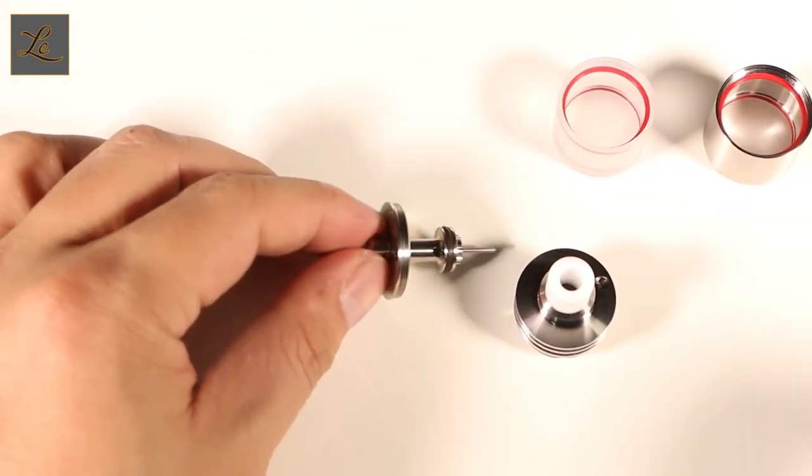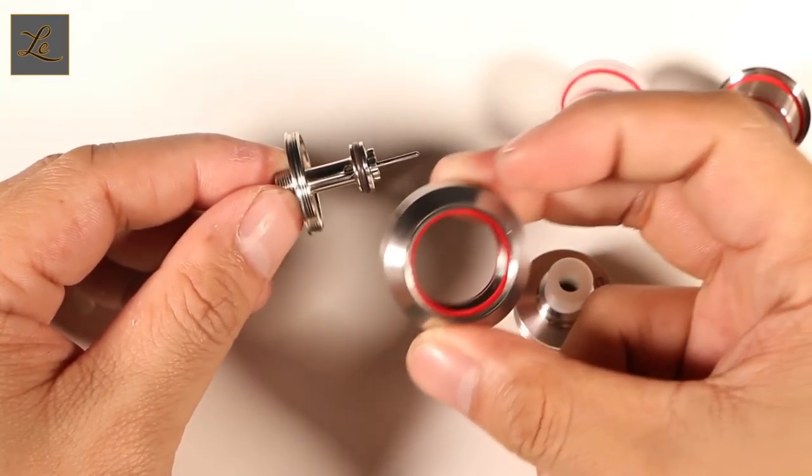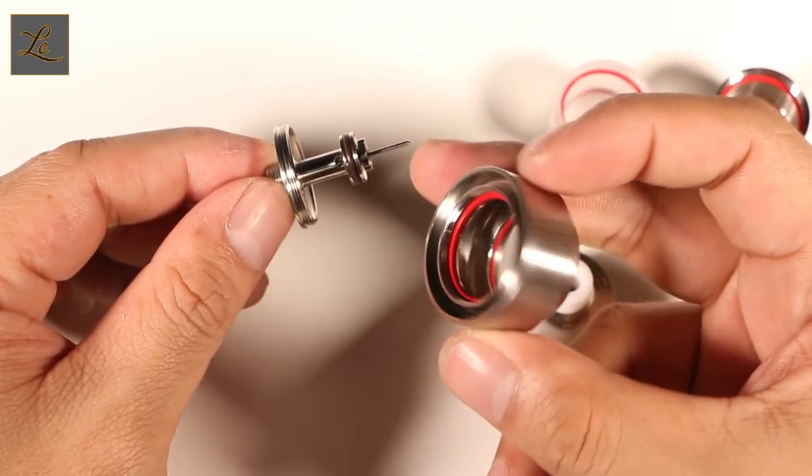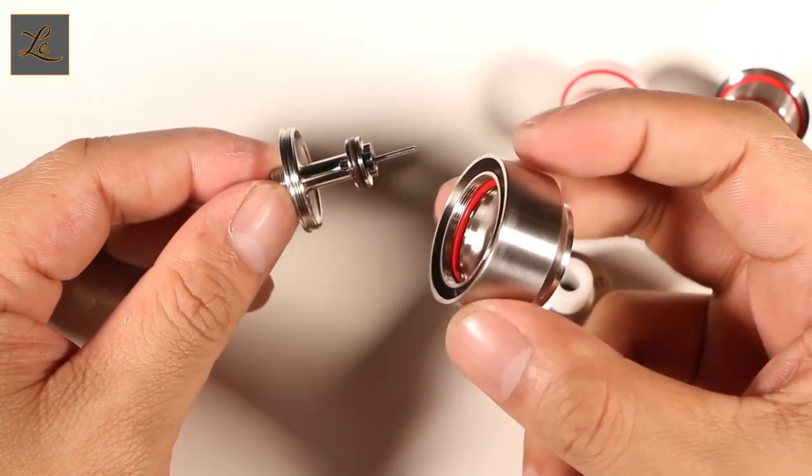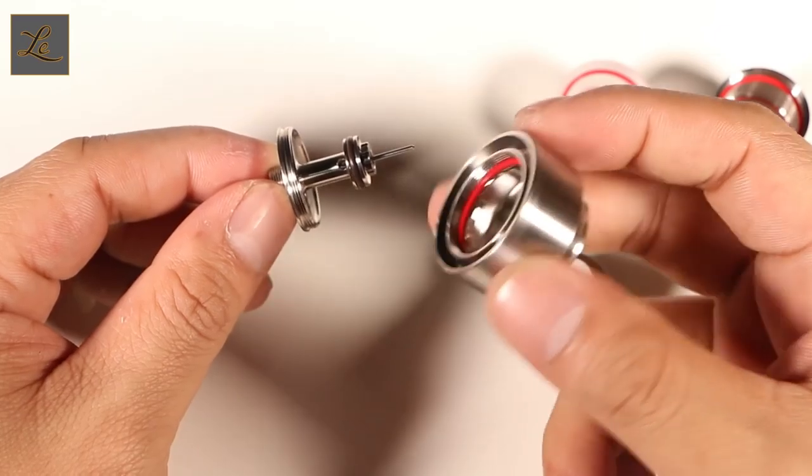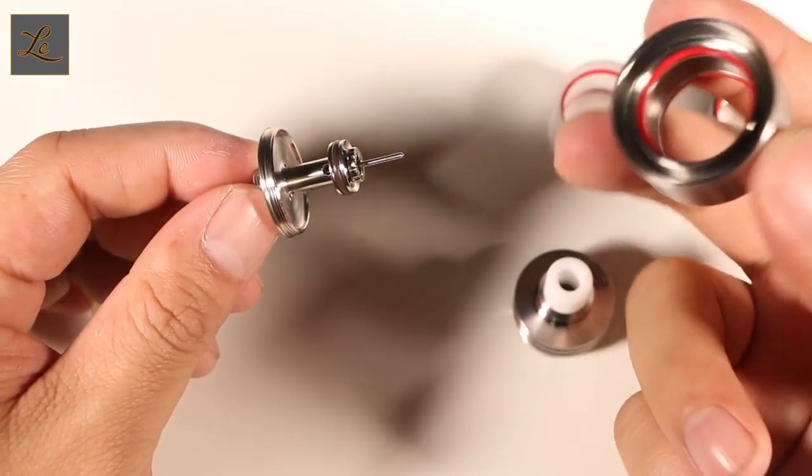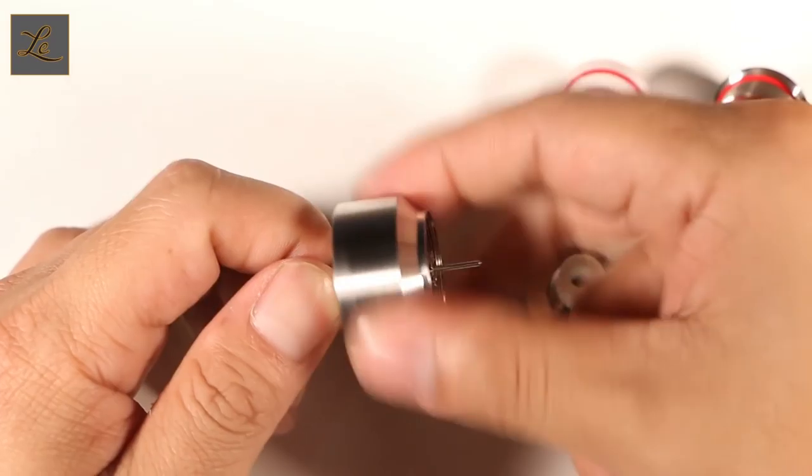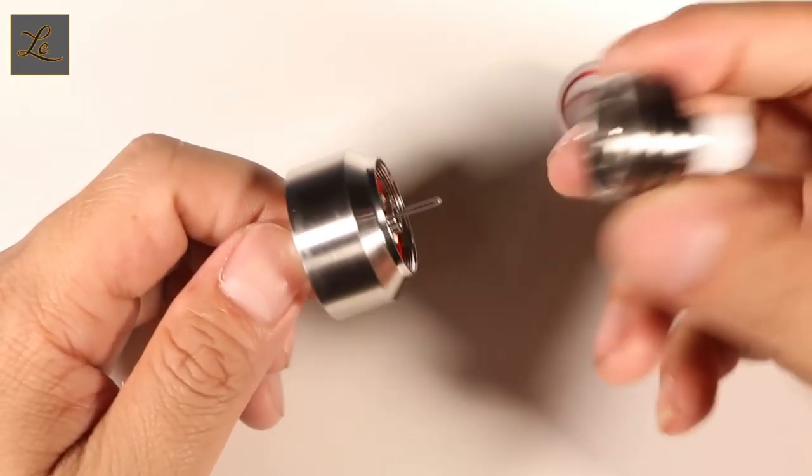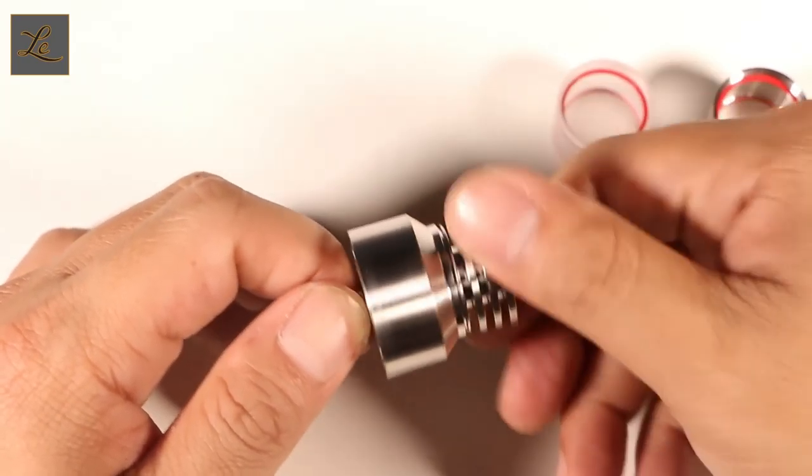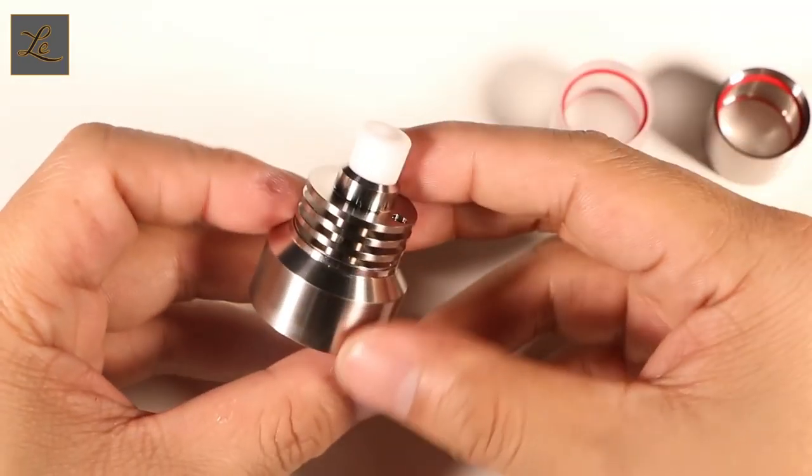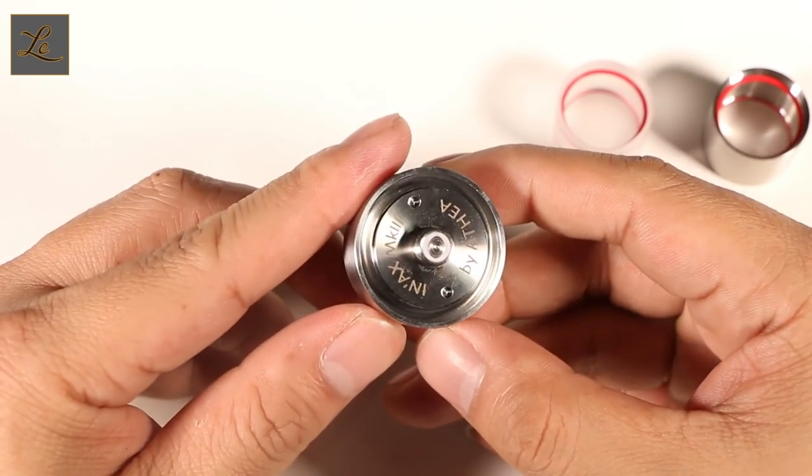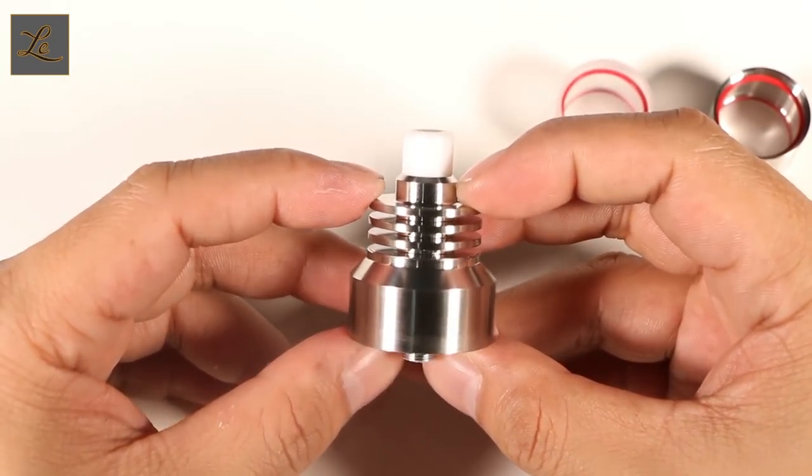Besides that, there is another option, this is the 5ml extended tank. The diameter of this 5ml extended tank is 28.5, so this will fit really well if you have one of those custom mods or slightly bigger mods that use 26650 batteries. It's the same, so what you need to do is just screw it on. The finishing on all this is really really good. Screw back the top cap, looks really really beautiful.